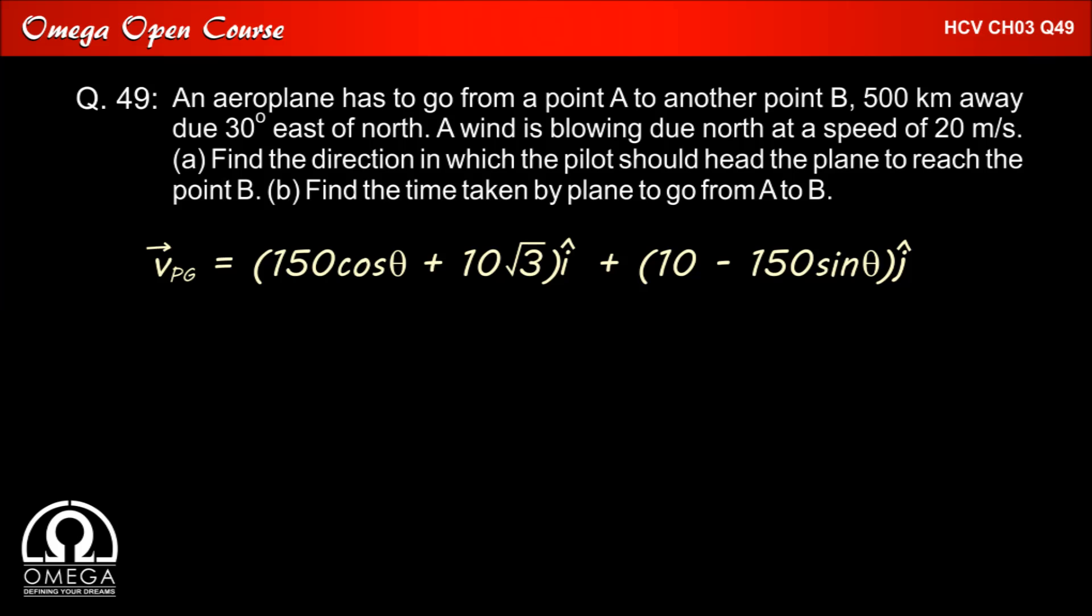Now in order to find the time taken by the plane to go from A to B, we find the speed of the plane with respect to ground. The velocity of plane with respect to ground is (150 cos theta + 10√3) i plus (10 - 150 sin theta) j.